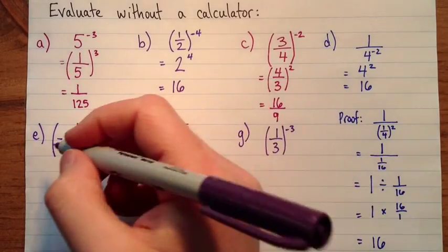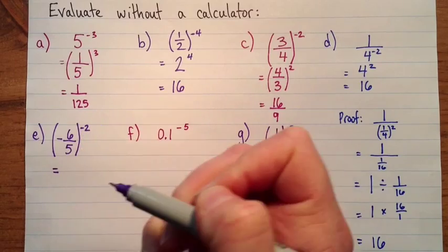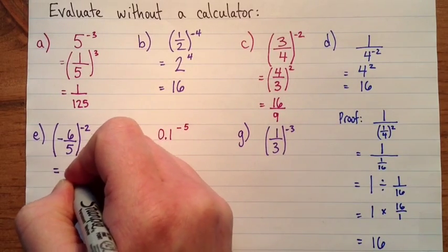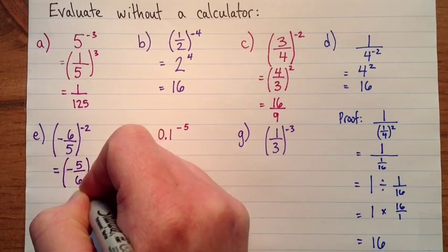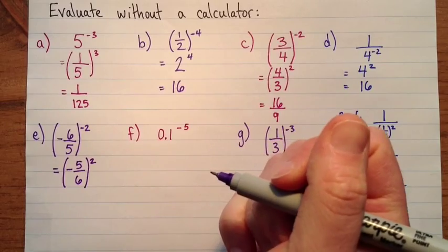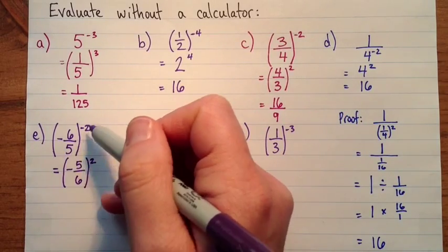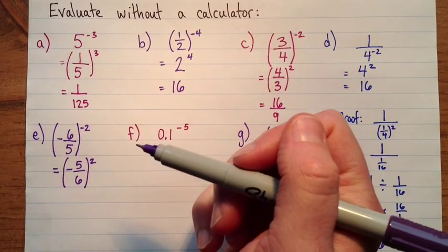Okay, next one down here on E. So negative 6 over 5 to the exponent negative 2. So that's going to be equal to negative 5 over 6 to the exponent 2. So notice that the negative in the base is just completely unrelated to the negative in the exponent. The negative in the exponent has nothing to do with whether the base is positive or negative.